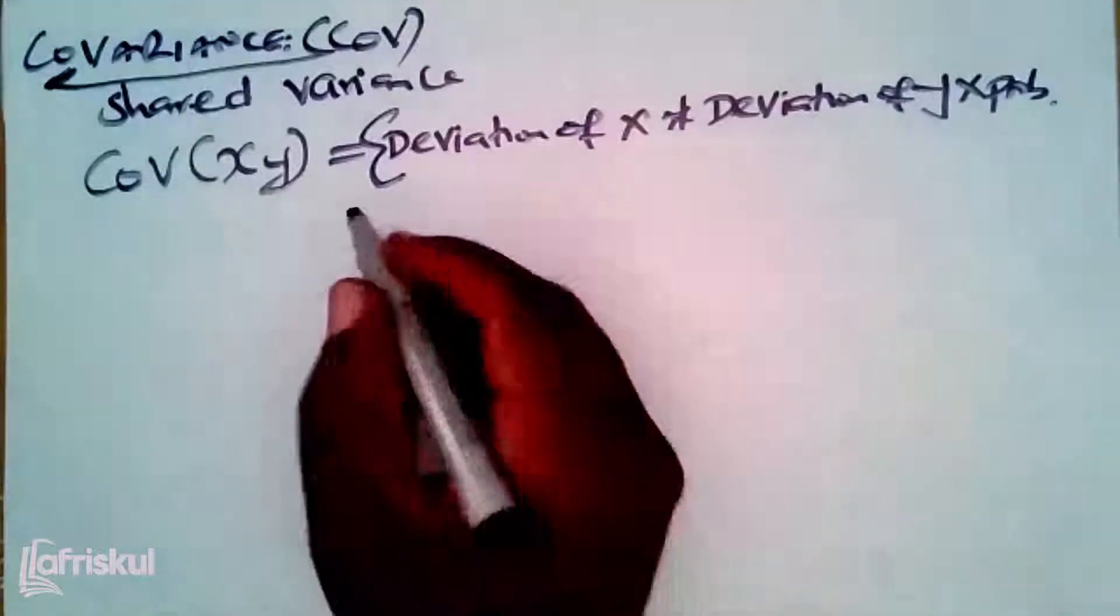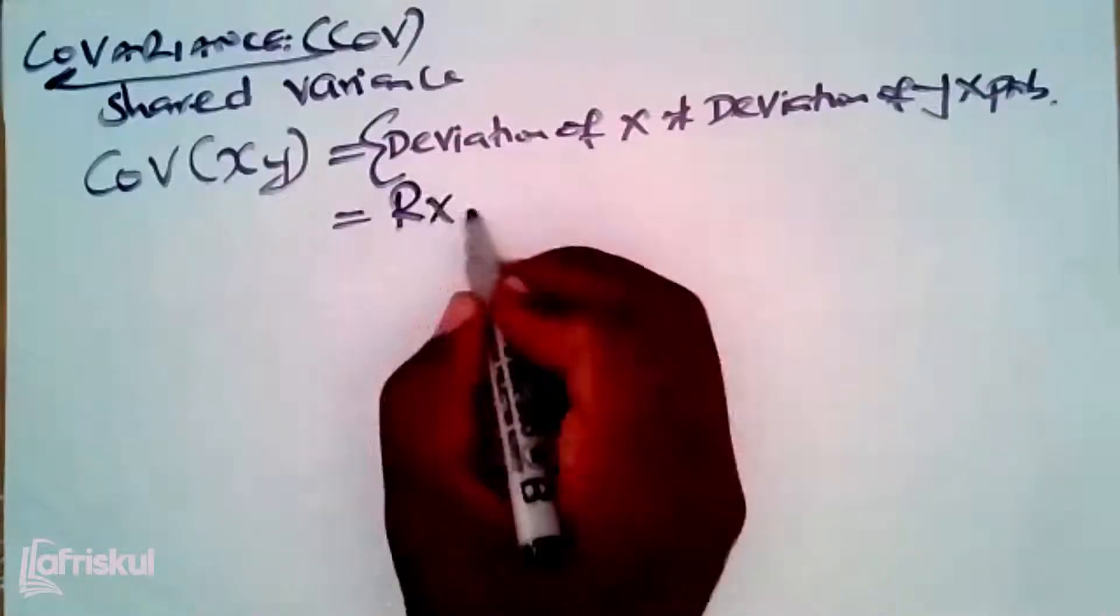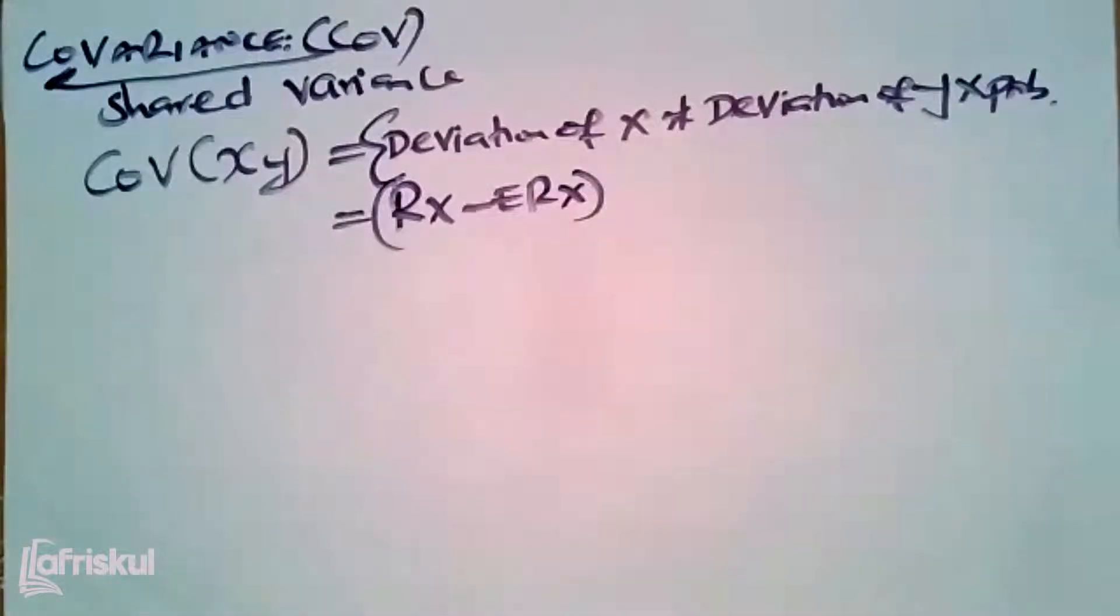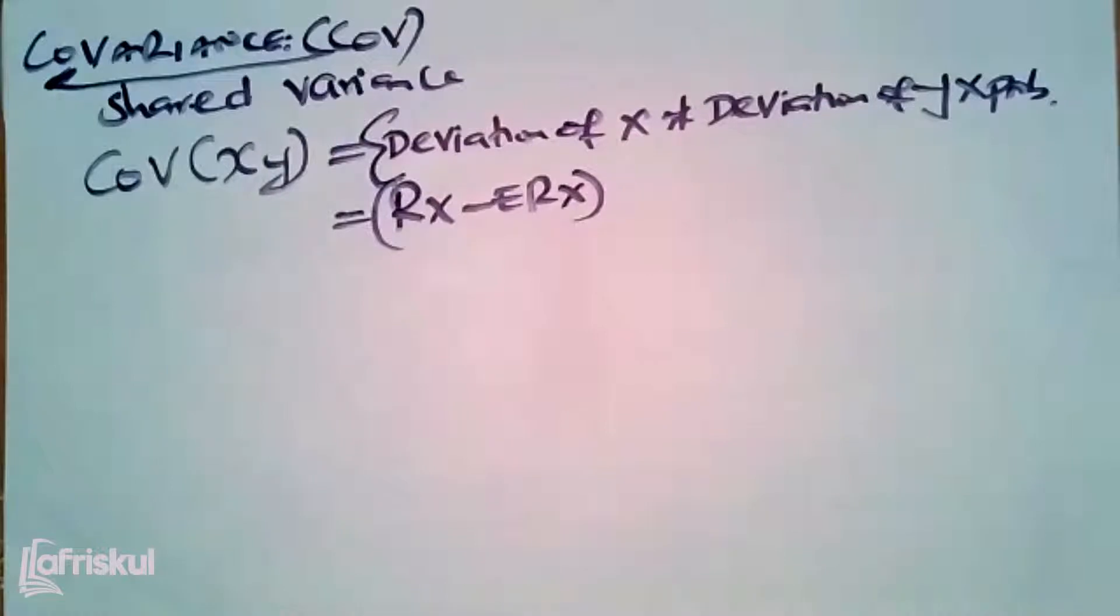So then how do we get the deviation of x? To get the deviation of x, we normally take the actual return of x minus the expected return of x. That is the difference between the actual - this one here that doesn't have E is the actual return of x minus expected return of x.